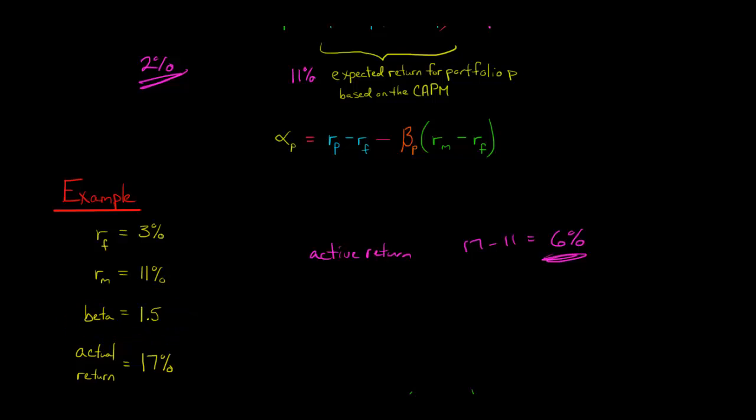Think about it like this intuitively. The market went up by 11%. If the beta was 1, then we would also expect the portfolio to go up by 11%. But the beta is higher than 1. So when the market goes up by 11%, this portfolio should go up by more than 11% because it has a beta higher than 1.